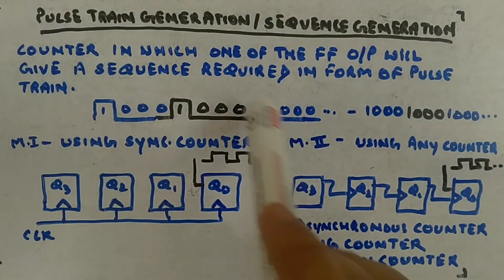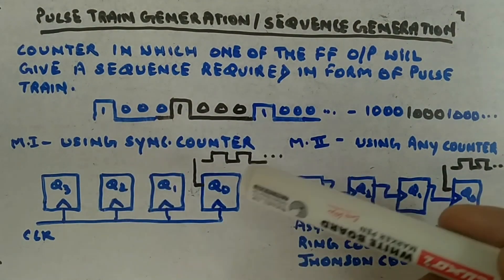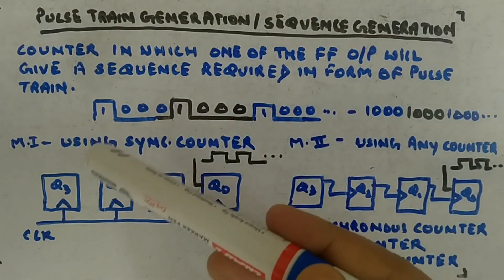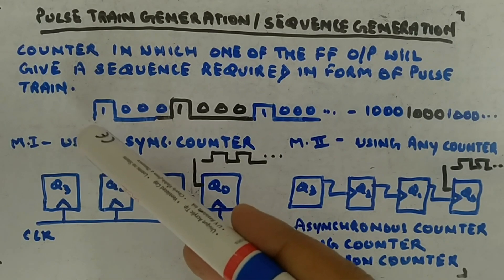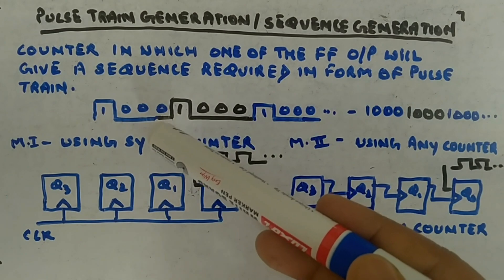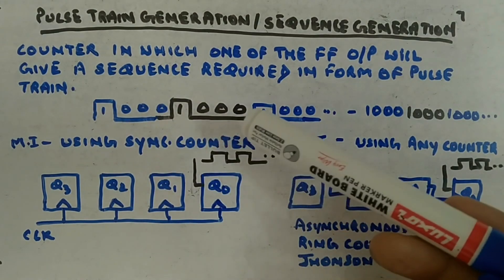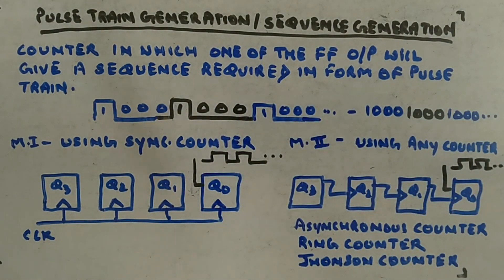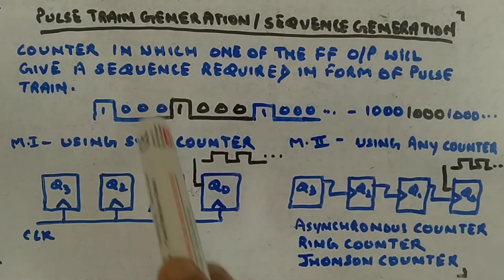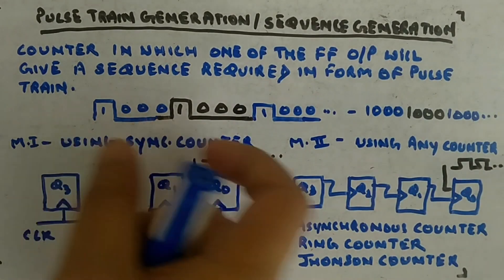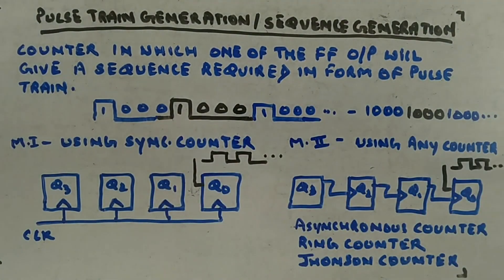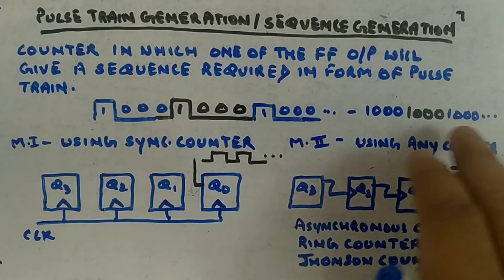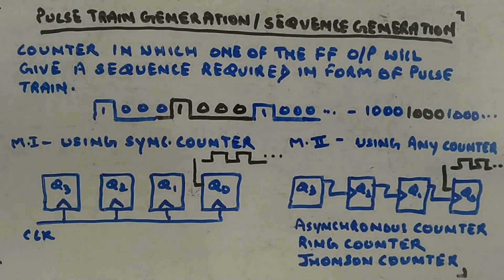To achieve this pulse train, you have to design the counter such that one of the flip-flop outputs gives this output. For the first clock cycle it is one, second is zero, third is zero, fourth is zero, fifth is again one, and so on. Only one flip-flop in the entire counter is giving you this kind of output. The sequence is one zero zero zero, one zero zero zero, repeating.